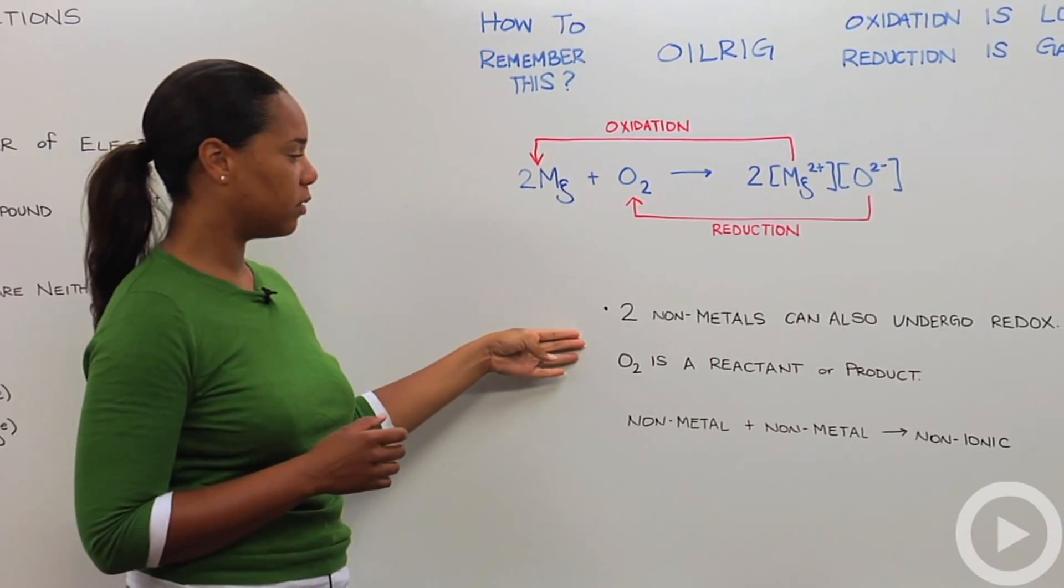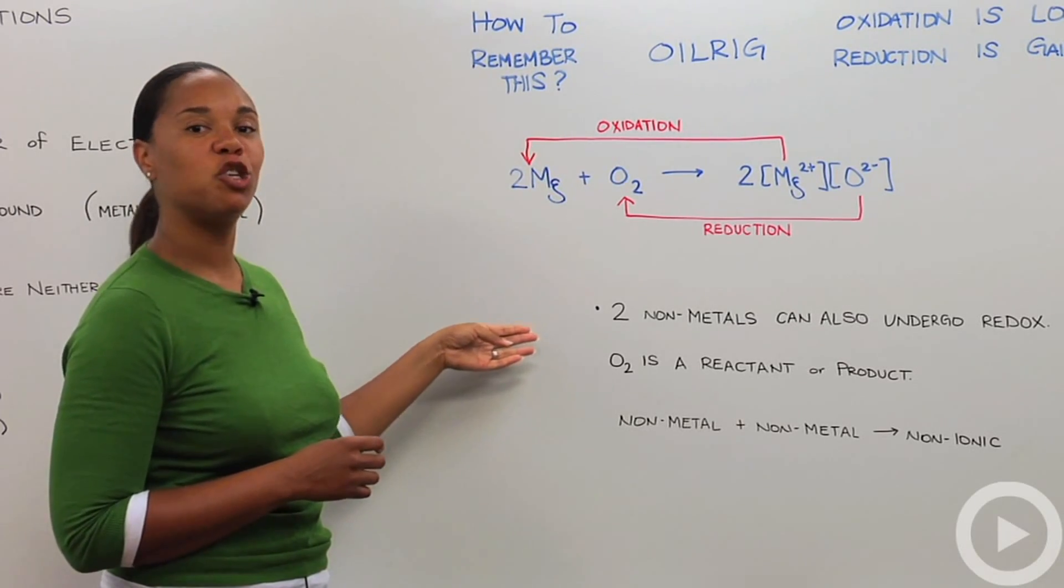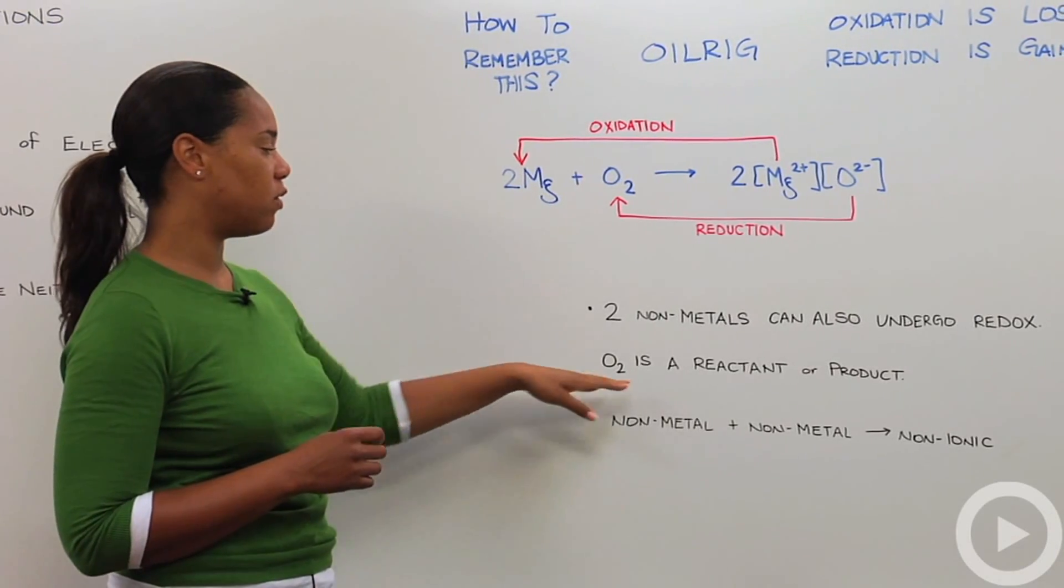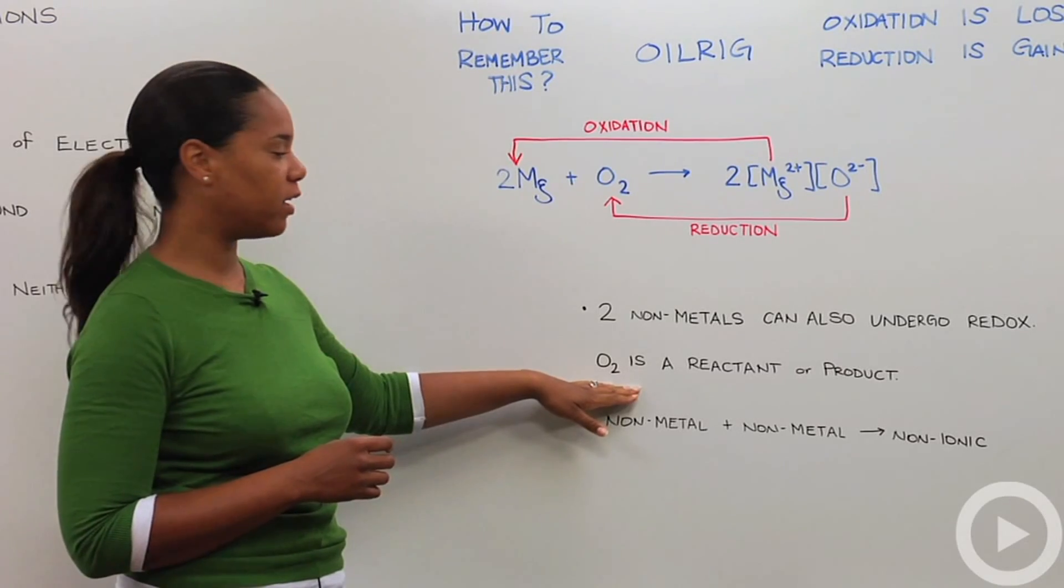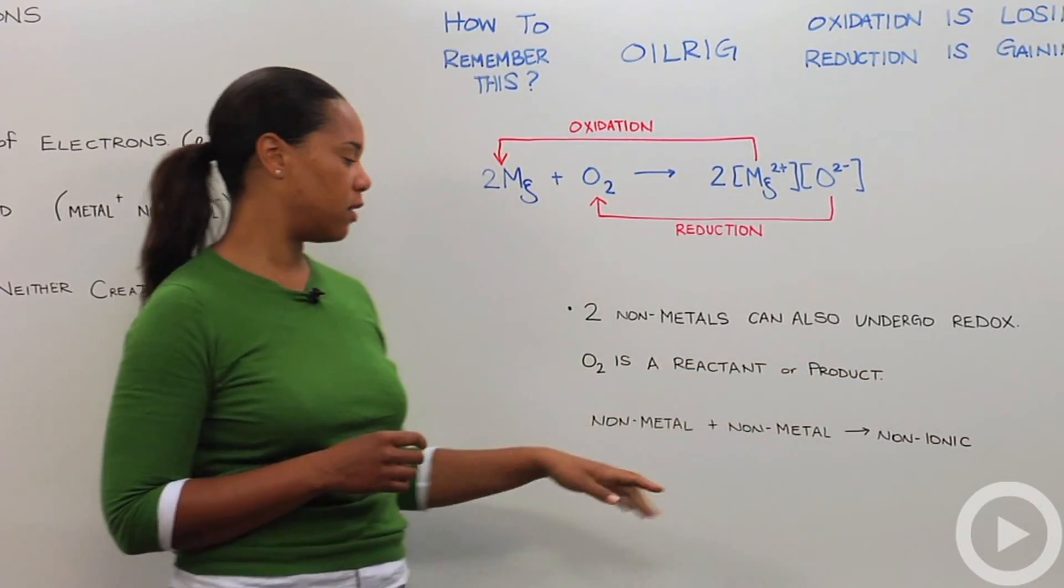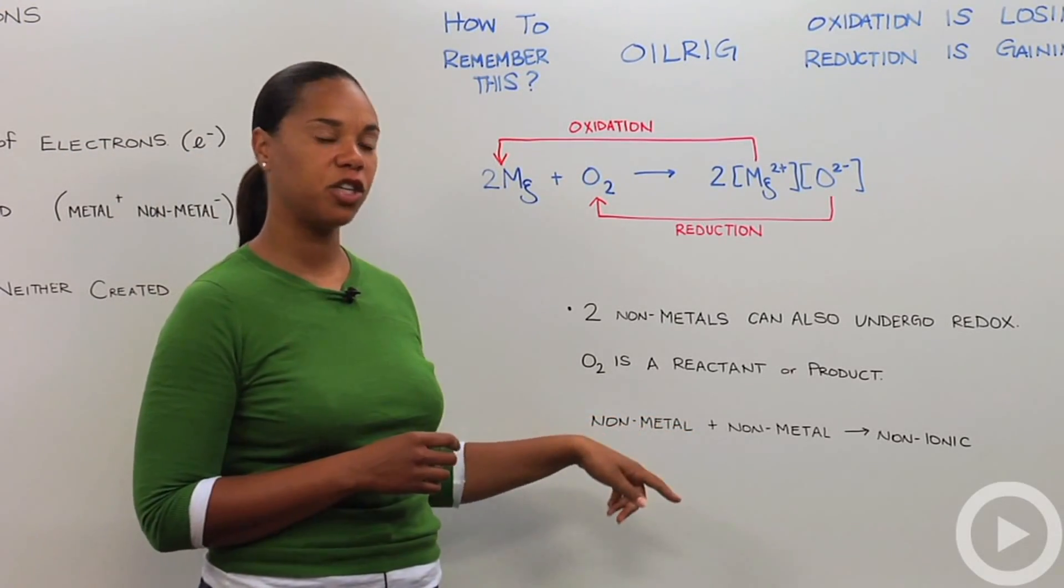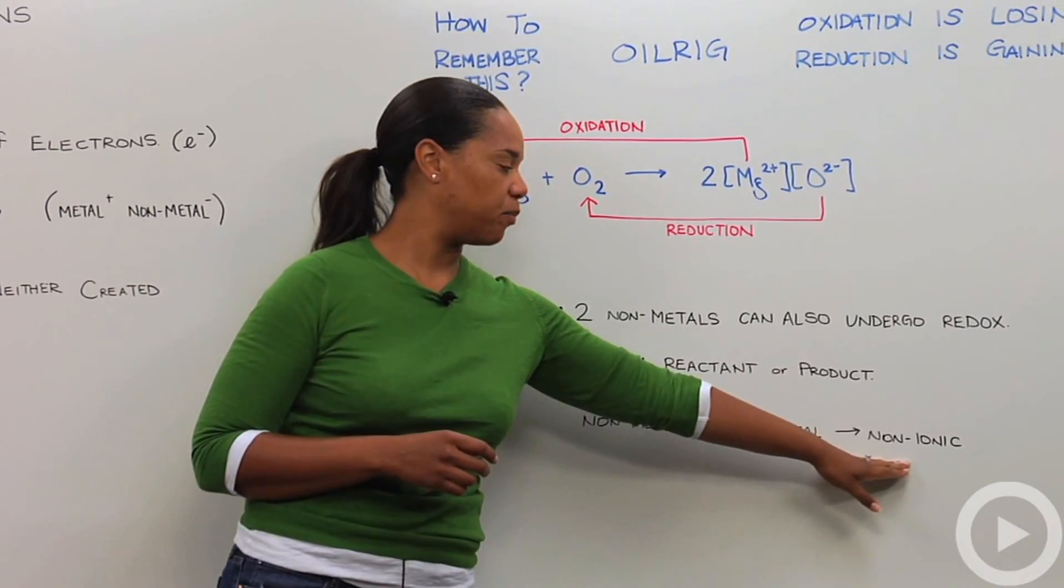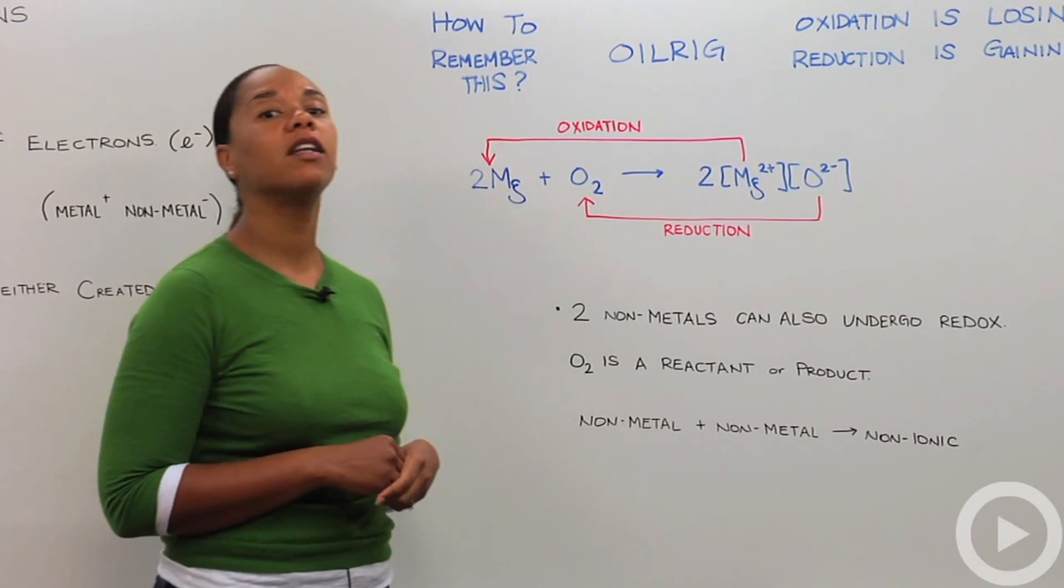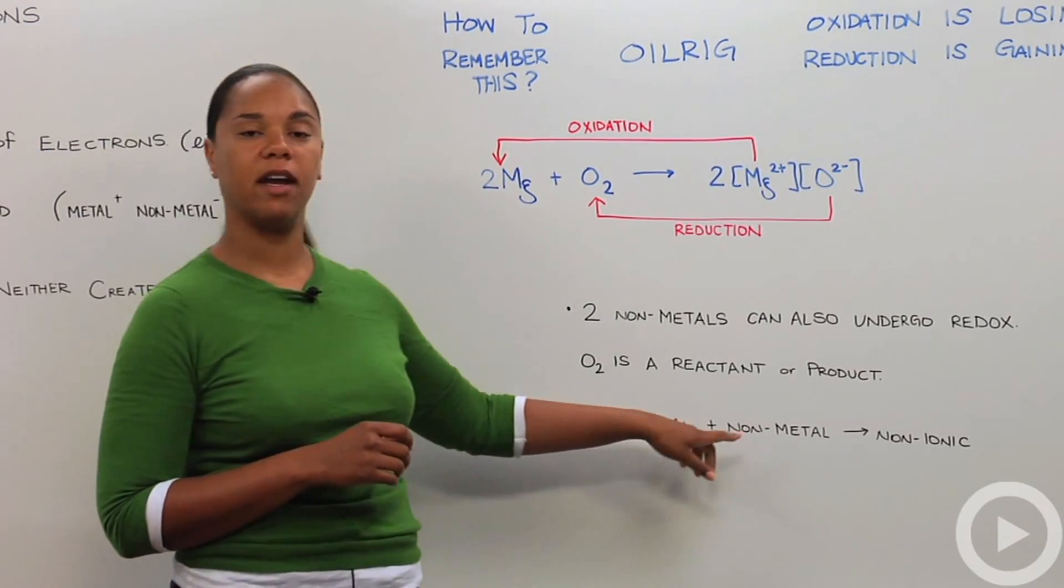So then also, last point, is that you can have oxidation reduction between two nonmetals. And how do you know that that's what's occurring? Is that oxygen is formed as a reactant or a product. And when you have two nonmetals reacting in an oxidation reduction reaction, the product is non-ionic, unlike in our reaction with a metal and a nonmetal.